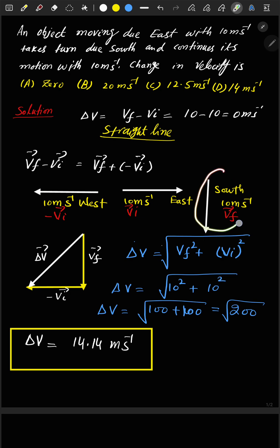Then add these two: vf and minus vi. According to this equation, you get this diagram according to the head-to-tail rule. As it is a right angle triangle, using Pythagorean theorem, we can find out the change in velocity, which is the hypotenuse of this right angle triangle.